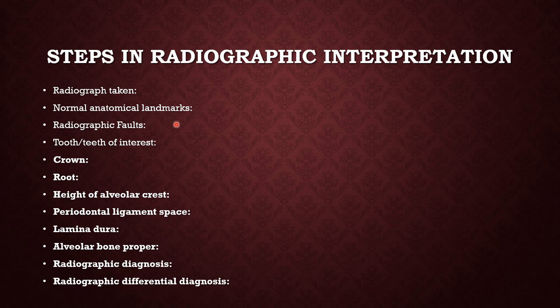What are the normal anatomical landmarks? If there are any radiographic faults, what type of faults do we see? Then we identify which teeth are present and the teeth of interest. For each tooth of interest, it is important to discuss the crown, root, height of alveolar crest, periodontal ligament space, lamina dura, alveolar bone proper, radiographic diagnosis and, of course, add a note on differential diagnosis wherever applicable.